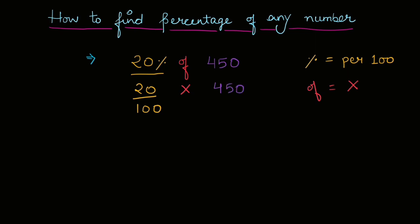So now, yeh jo statement hai, ye ab aapko thoda sa mathematical lag raha hai. Okay, ab hamein kya karna hai? Simple calculate karna hai. So 20 upon hundred, hum kya kar sakte hai? Numerator mein jitne bhi zero hai, unko denominator ke zero ke saath cut kar sakte hai.